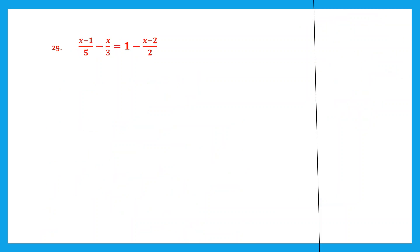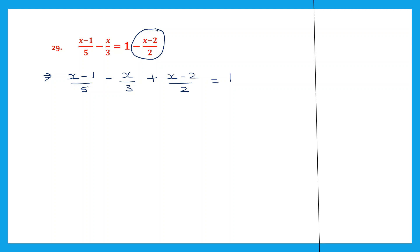Question 29. Now we have x fractions on the left side as well as the right. What we can do first is transpose to the left hand side. So we have x minus 1 by 5, then we have minus x by 3. Now when you transpose, it becomes plus x minus 2 by 2. All this is equal to 1. So let's work out these 3 fractions. We have x minus 1 by 5, then we have minus x by 3, plus x minus 2 by 2.